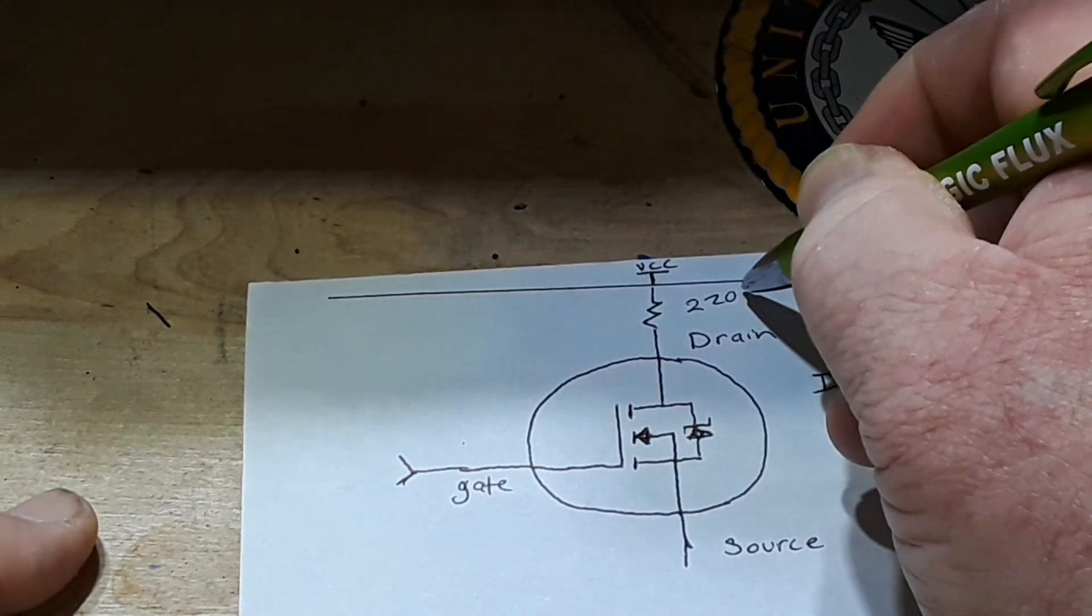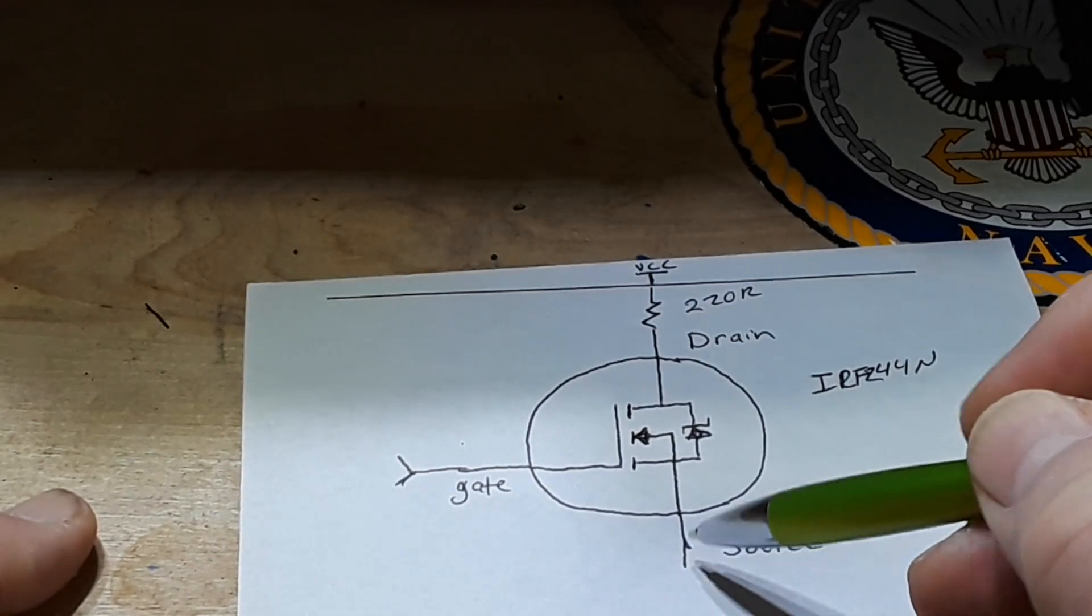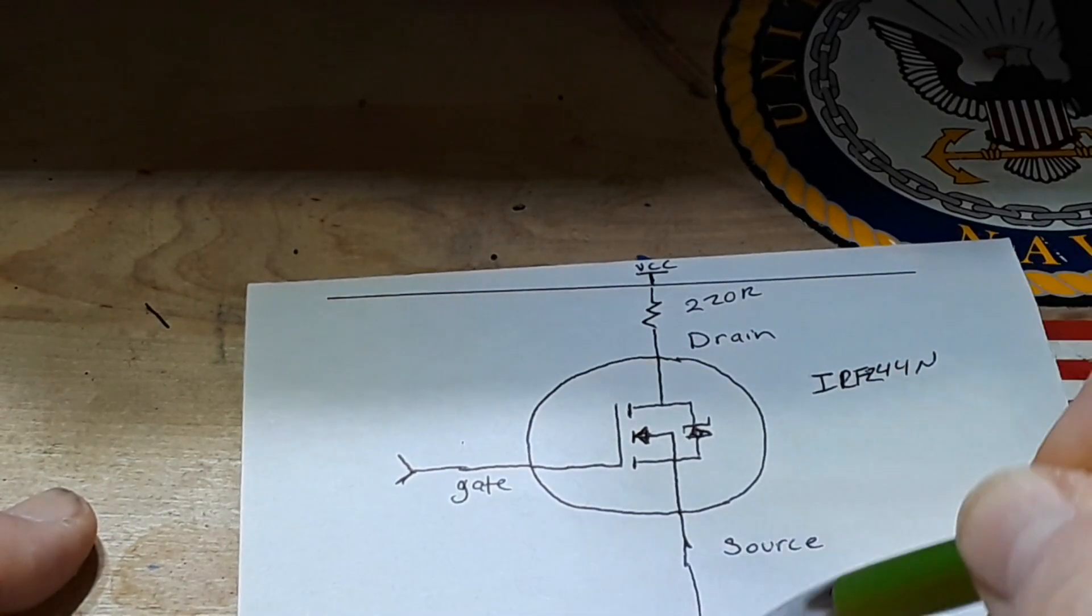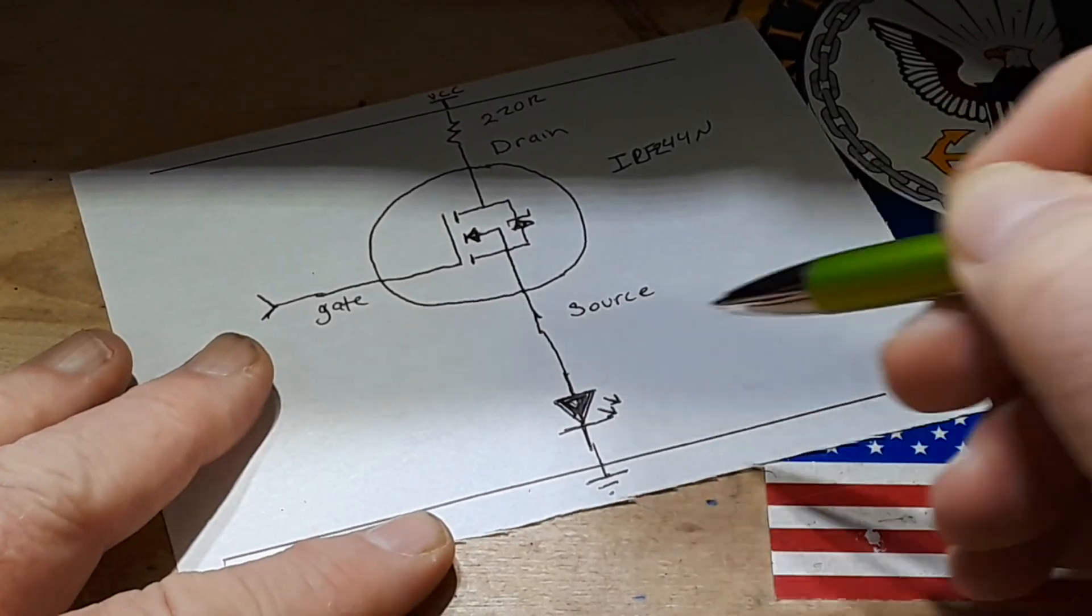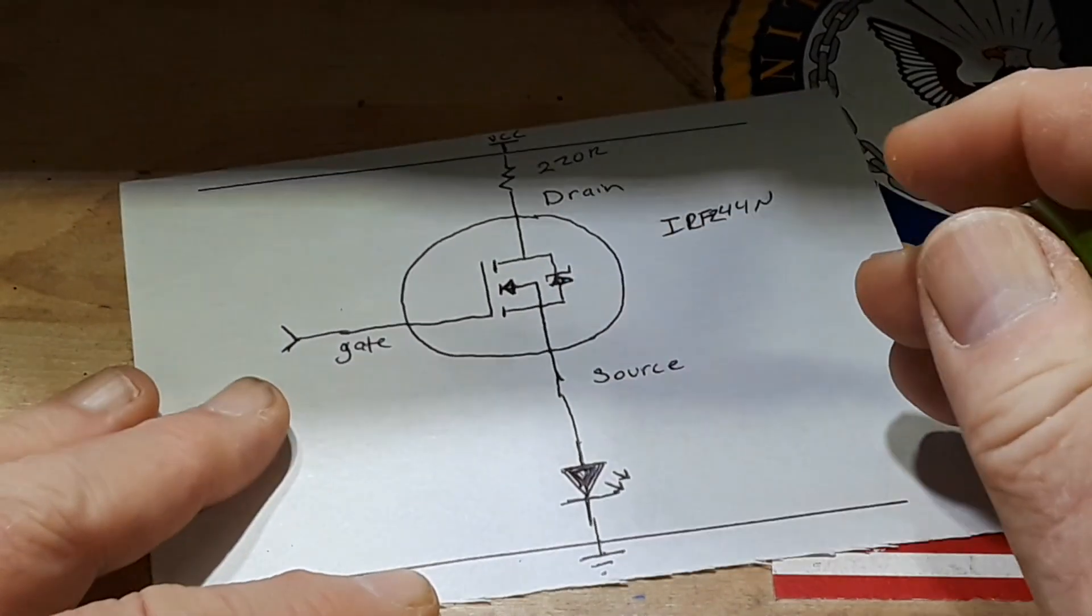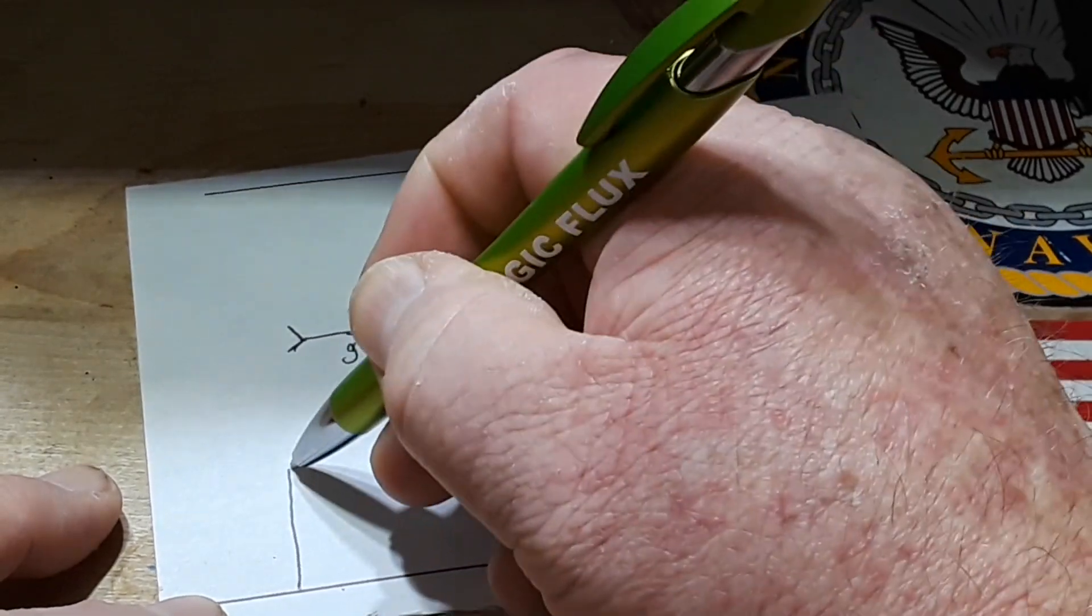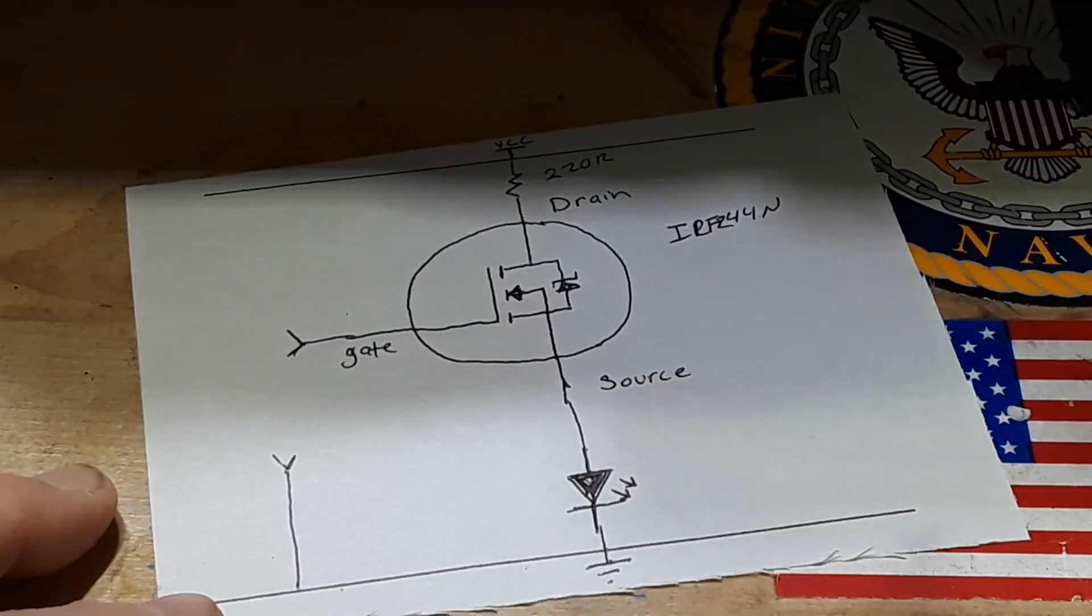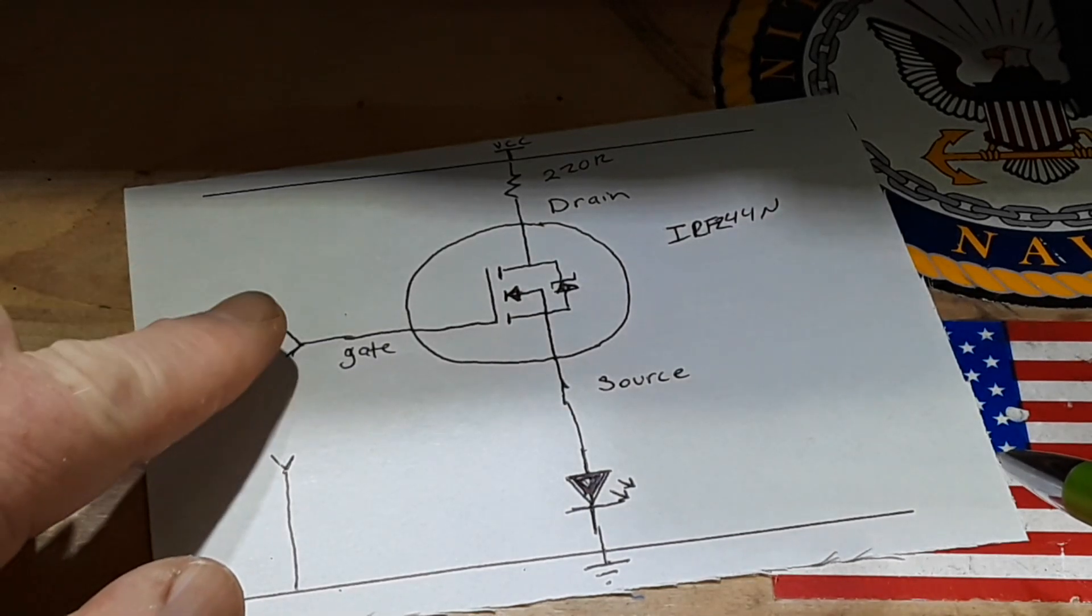And we connect the source to the LED down here, which also goes to ground. Now there is also a wire coming from ground, and then our gate is not connected to anything, and that's what we'll be using for the capacitive touch.